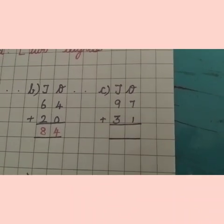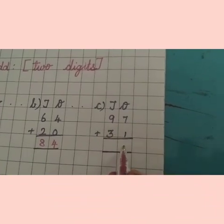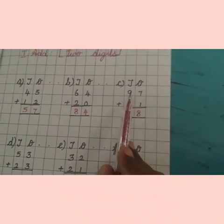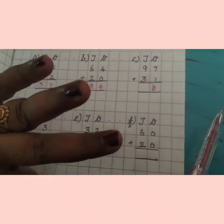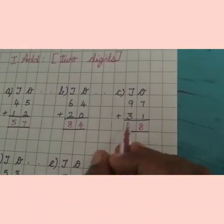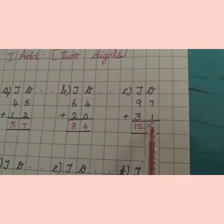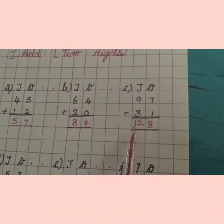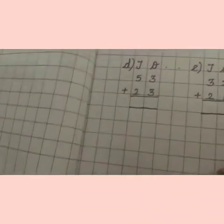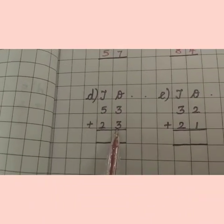Next: 97 plus 31. First, add the ones place — seven in the mind, one in the finger — after seven: eight. Next, tens place: nine in the mind, three in the finger — after nine: ten, eleven, twelve. Answer is 12. 97 plus 31 is equal to 128.